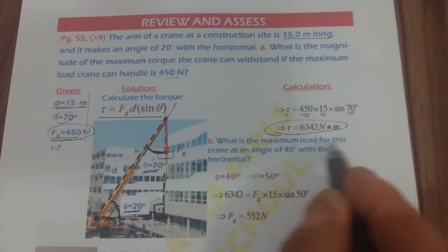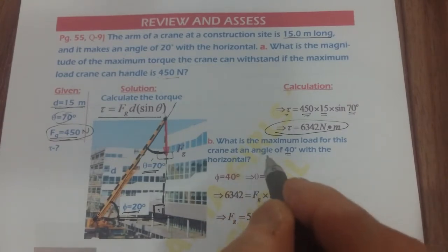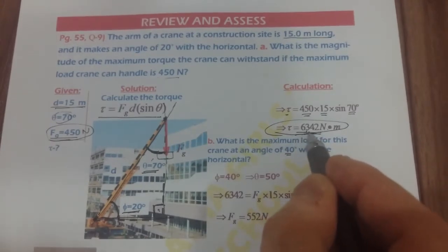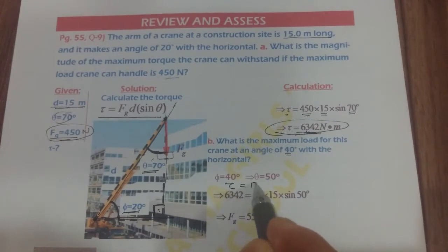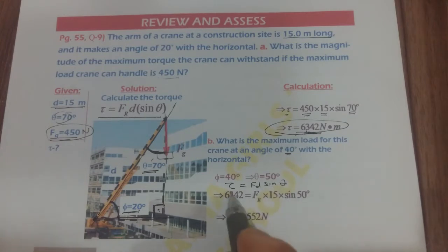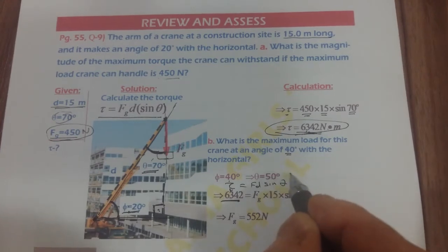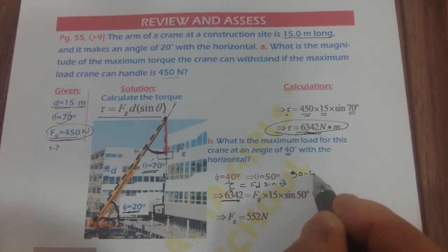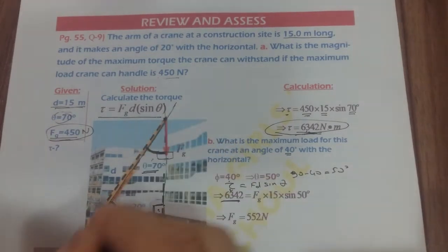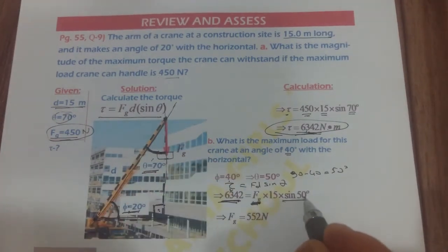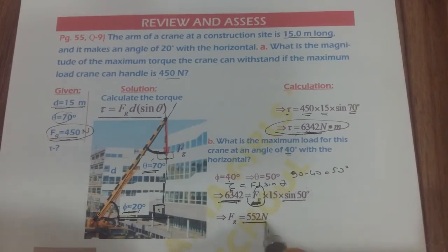In part B, we find the maximum load for the crane at an angle of 40 degrees with the horizontal. The crane can handle a maximum torque of 6342 newton meters. Using torque equals F times d times sine theta again, but the angle has changed to 40 degrees, so theta becomes 50 degrees (90 minus 40). Solving for the force gives a maximum load of approximately 552 newtons.